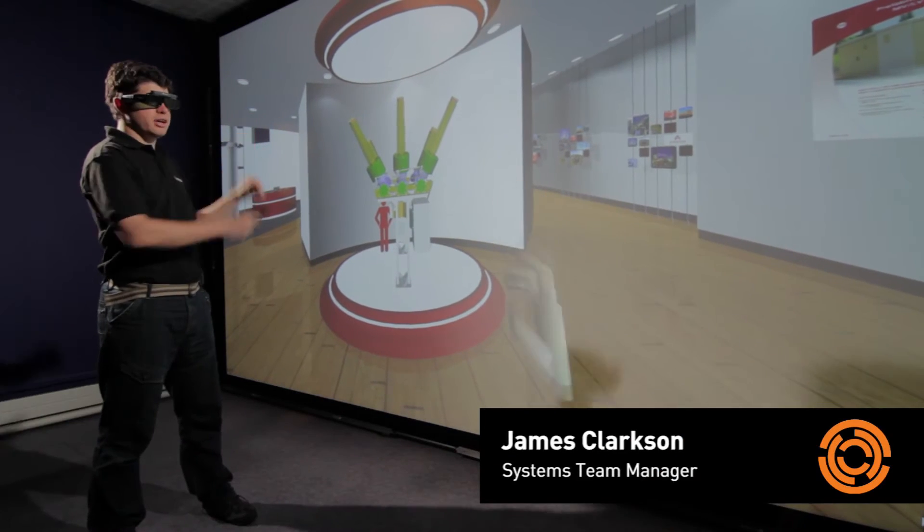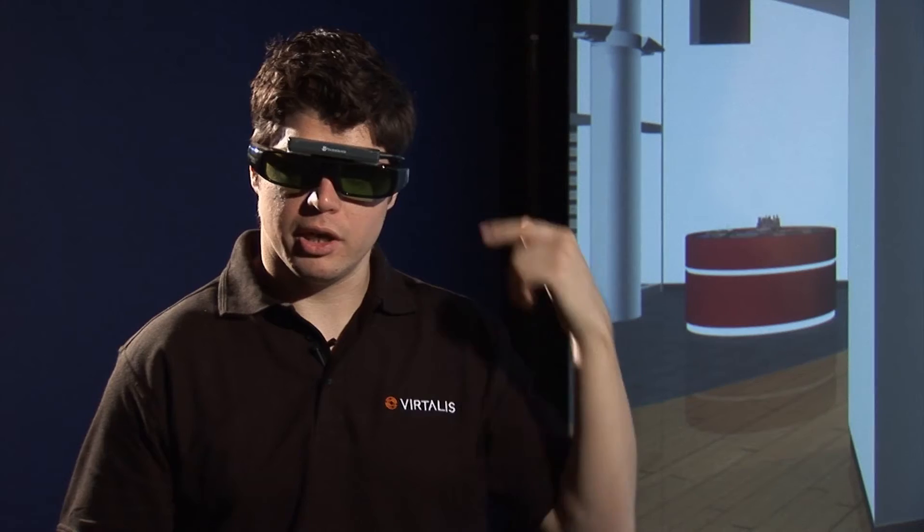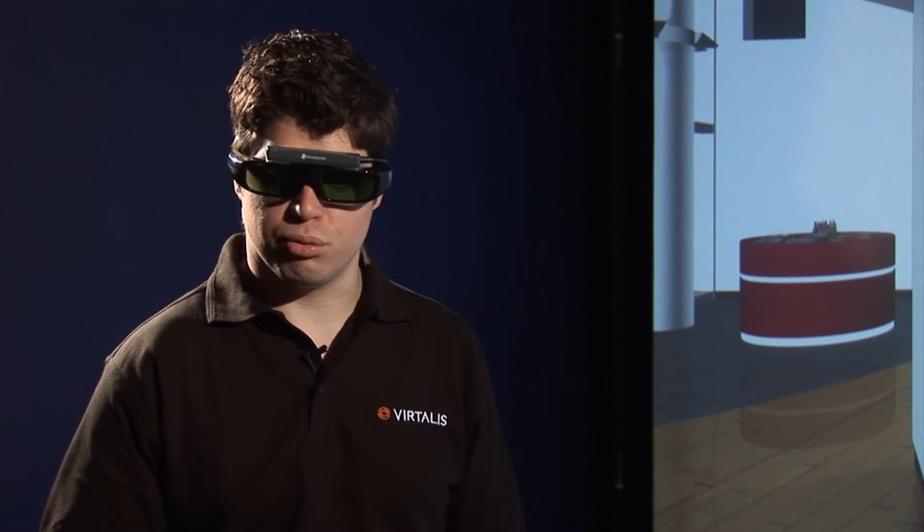Now we have the active wall with a tracking system. The tracking system tracks my head and hand in 3D space, triangulating the position and orientation information, which is then sent to the computer to update the 3D environment.